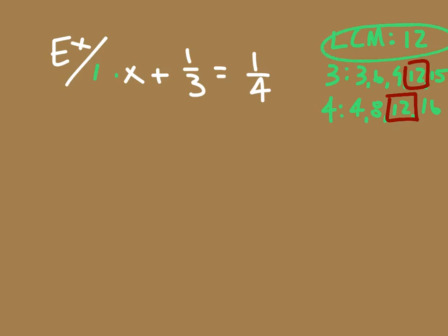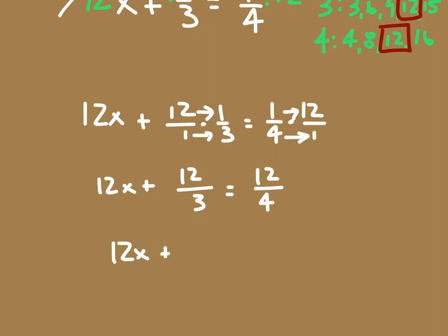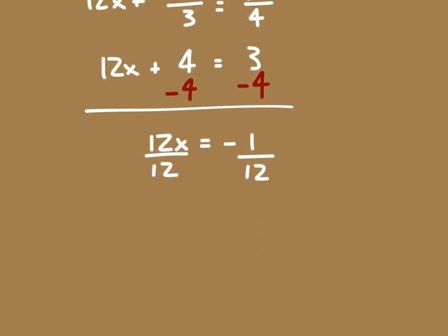I'm going to multiply everything in this equation by 12. I end up getting 12x plus 12 over one times one over three equals one over four times 12 over one. Multiplying across: 12x plus 12 over three equals 12 over four. Simplifying: 12x plus four equals three. Subtracting four from both sides gives 12x equals negative one. Dividing both sides by 12, x equals negative one-twelfth.